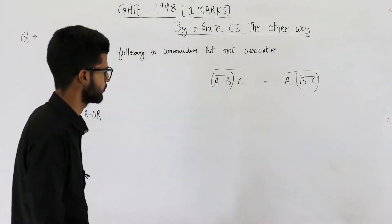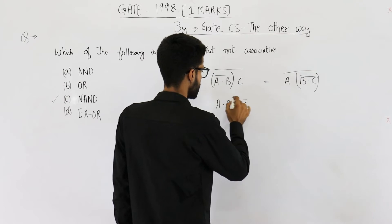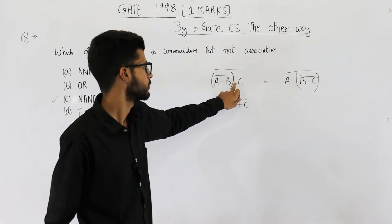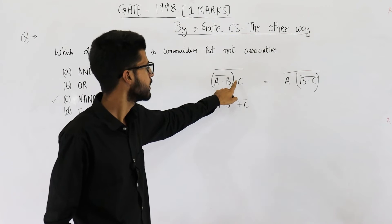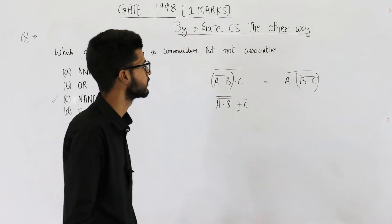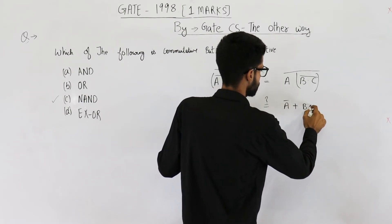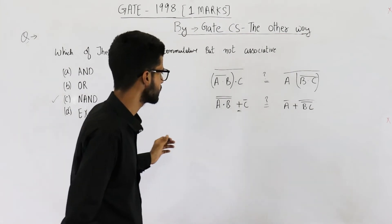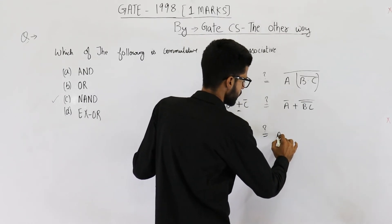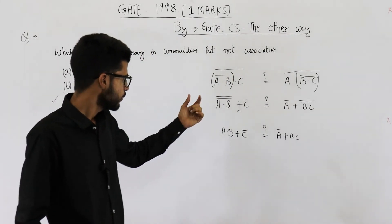NAND gate is not associative, but let's solve it. We get A dot B plus C bar, after applying De Morgan's law — which says to split the bar on both sides and change the sign. Here, AND changes to plus and the bar is split on both sides. Similarly, applying De Morgan's law to the other side, we get A dot B plus C bar versus A bar plus B dot C. They are not the same, which confirms that NAND gate is not associative. This means the order of solving these NAND gates actually matters.